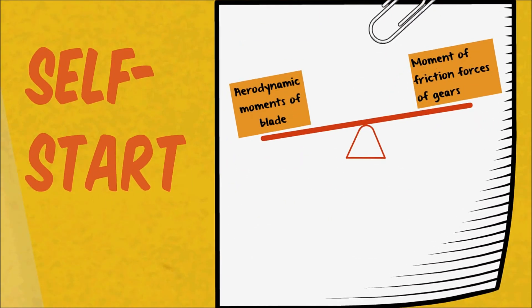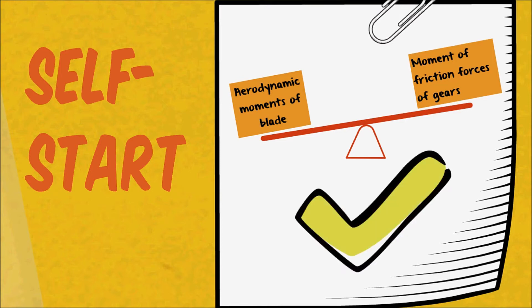Lastly, self-start. The self-start capabilities of the turbine is determined by the aerodynamic moments of the blade compared with the moment of friction forces in the gears. The relatively large surface area of the design and twist at the root would inherently provide a large aerodynamic moment for the blade to self-start even at low speeds.